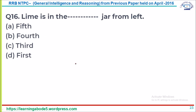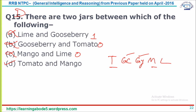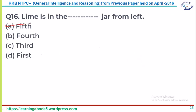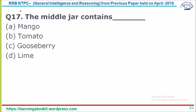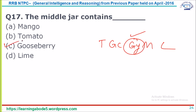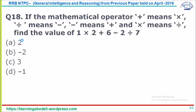Question 16: Lime is which jar from the left? Lime is in the fifth position. Answer option A. Question 17: The middle jar contains gooseberry. The order is Tomato–Garlic–Gooseberry–Mango–Lime, and the middle (third) jar is gooseberry. Answer option C.